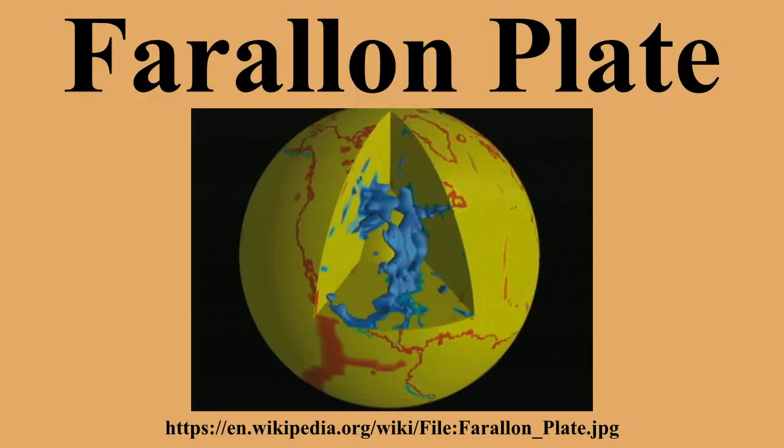Historic view: As data accumulated, a common view was that one large oceanic plate, the Farallon Plate, acted as a conveyor belt, conveying terranes to North America's west coast where they accreted. As the continent overran the subducting Farallon Plate, the denser plate was subducted into the mantle below the continent.